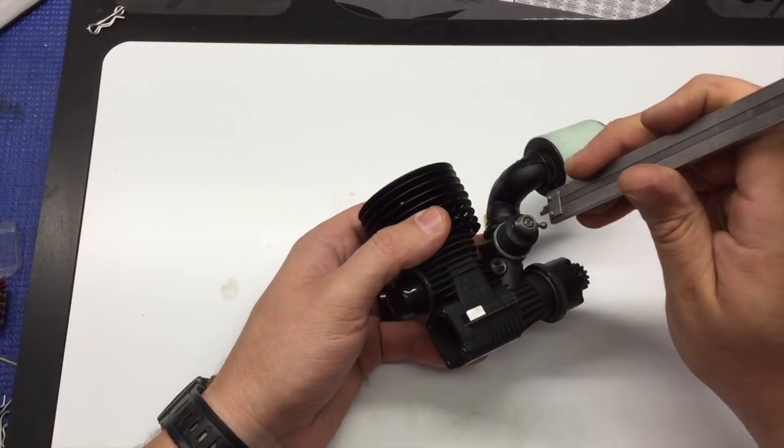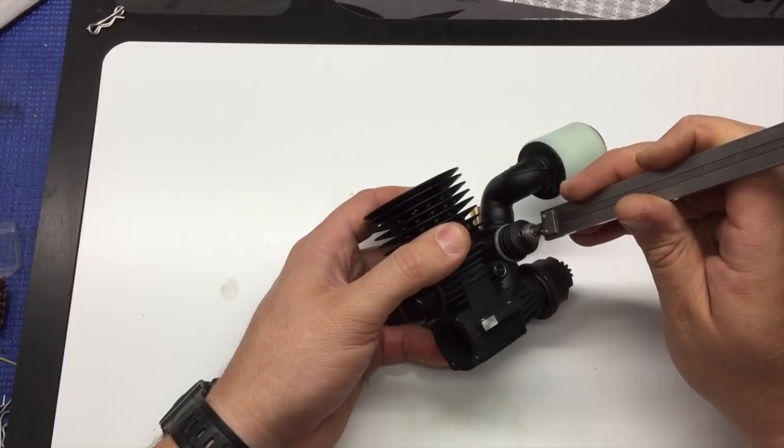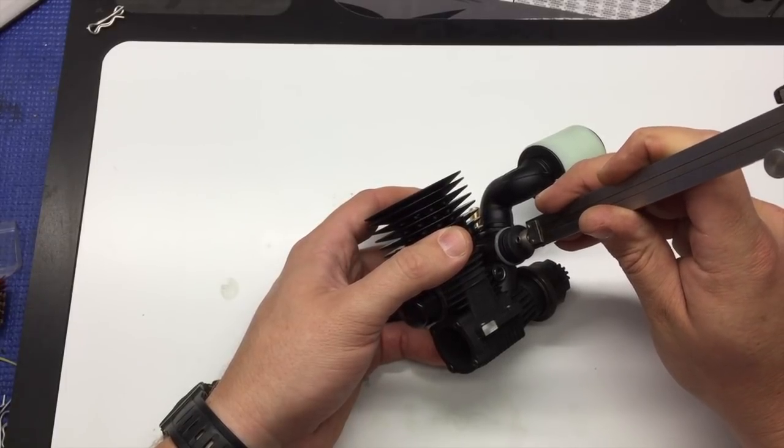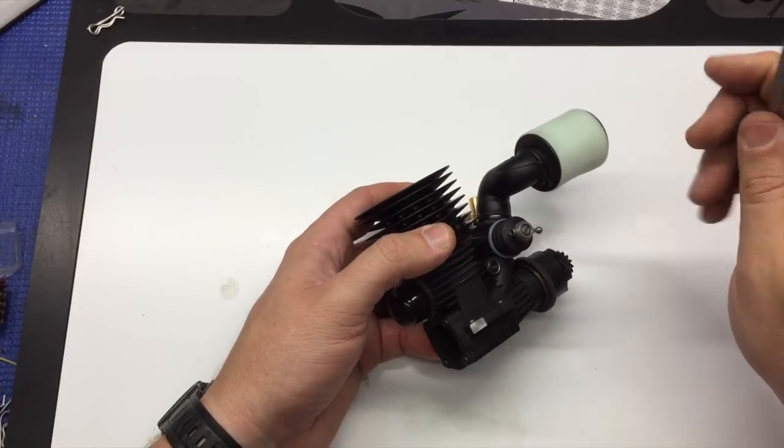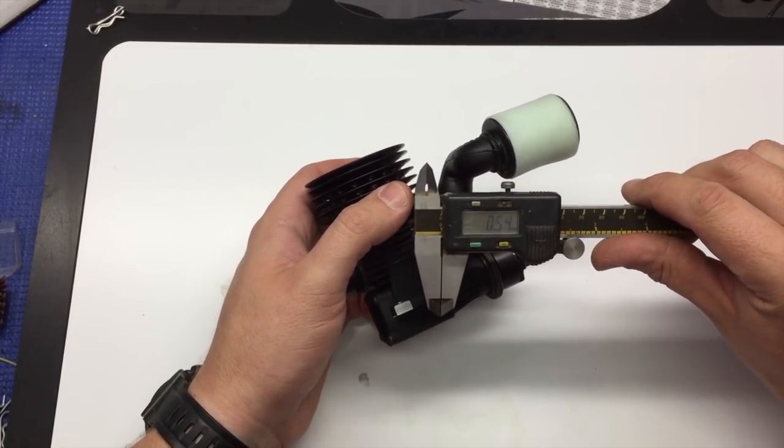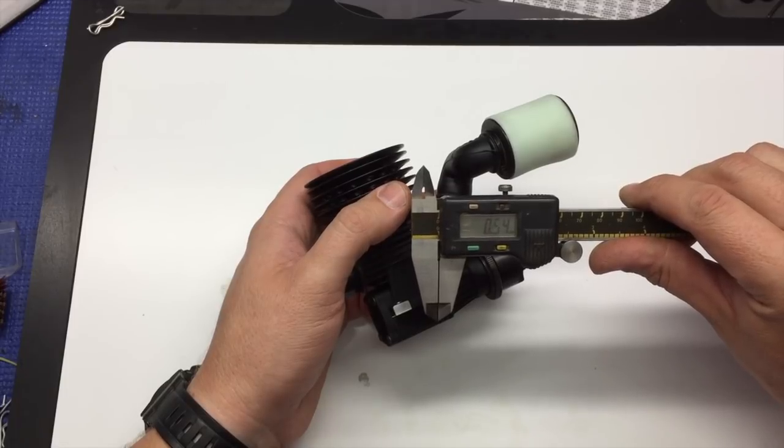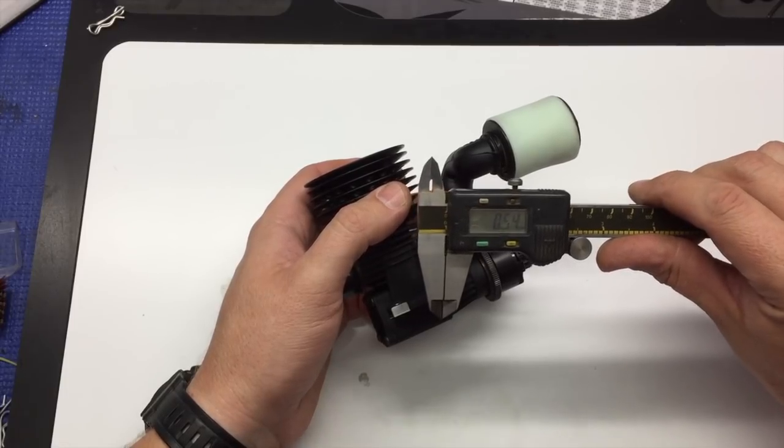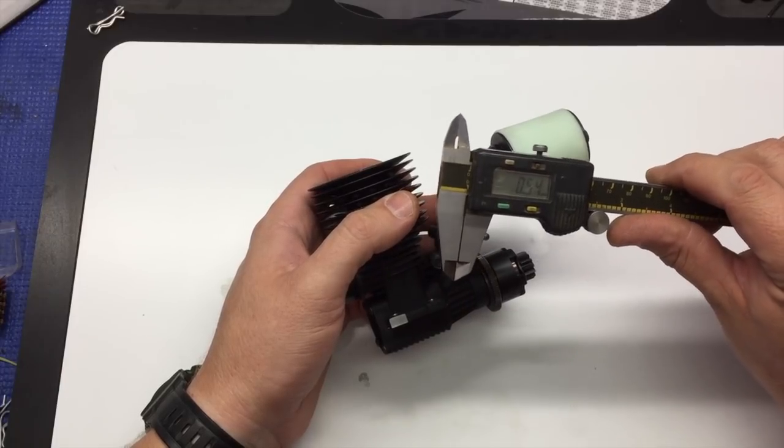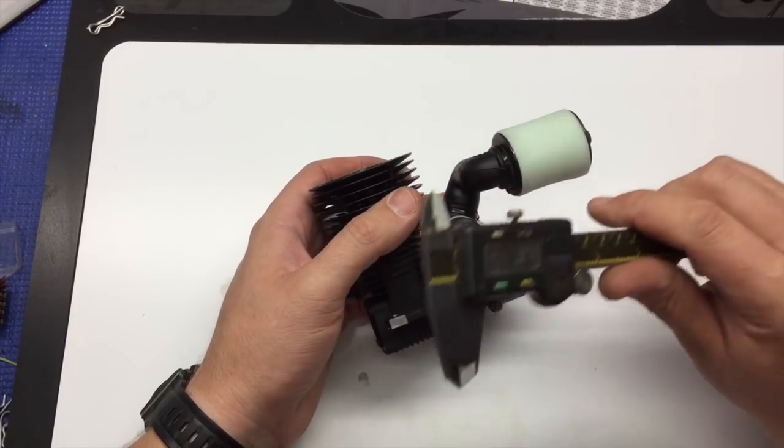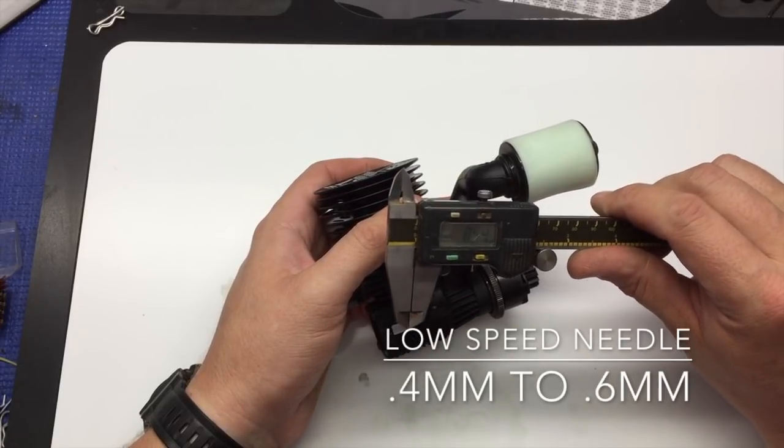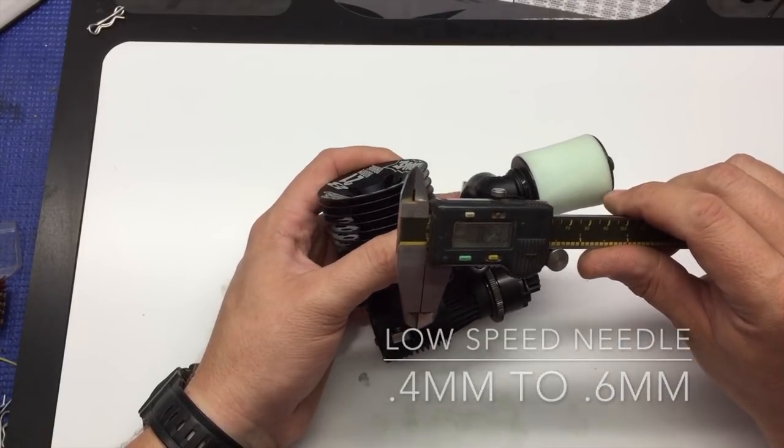And then we'll start by measuring the low speed needle first, and you just want to go ahead and measure that with the calipers. So I have .54 millimeters, so basically half a millimeter in from flush. So I would say the safe range for this on the low speed would be between .4 and .6, depending on the track conditions.